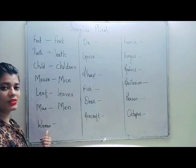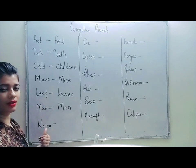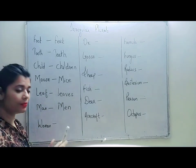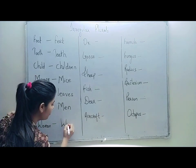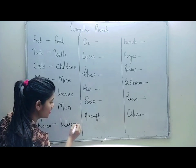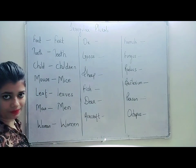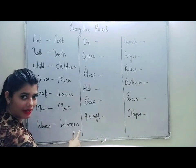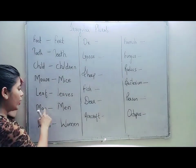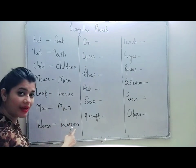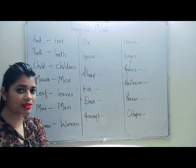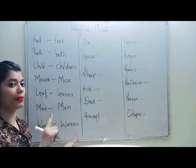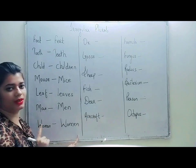Next word is woman. If there is one woman, we say woman. But if there is more than one, we write W-O-M-E-N and we pronounce it 'women', V-E-M-E-N. Note that the spelling looks like woman but just as we changed A to E in man→men, we do the same here. The pronunciation will be 'women', not 'woman'.